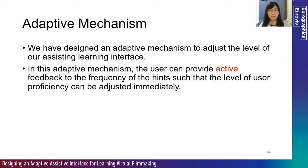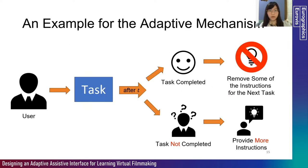Our adaptive mechanism adjusts the level of the assisting learning interface according to the principle of instructional scaffolding — the assistance provided should be customized and adjusted dynamically as proficiency improves. The user can provide active feedback on the frequency of hints, allowing the level of user proficiency to be adjusted immediately. For example: a user starts a task, we record the time; after time t, if the task is completed, the user model is adjusted to a higher level; if not completed, more hints are provided, such as repeating the task through the headset or displaying the pointer more noticeably.